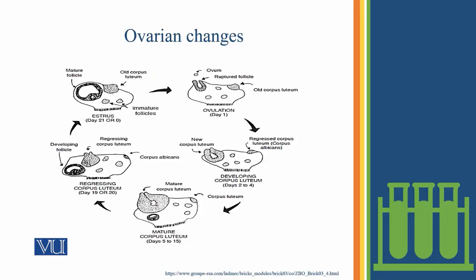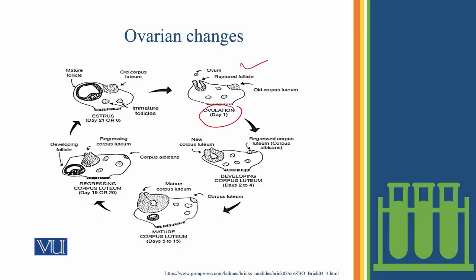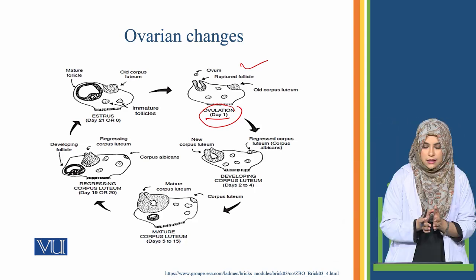Now let's look at this figure, which shows different ovarian changes with different phases and stages to illustrate this cycle. This cycle starts from ovulation, so you can see day one mentioned. Now, what is ovulation?